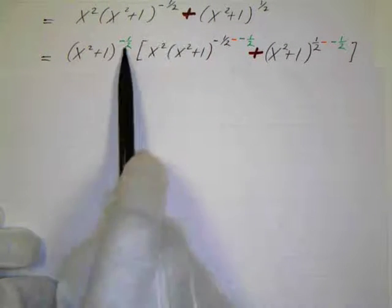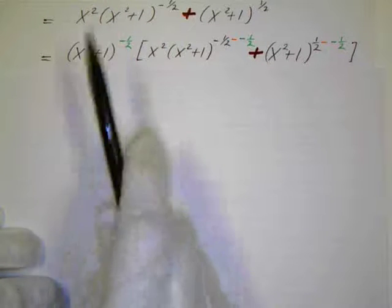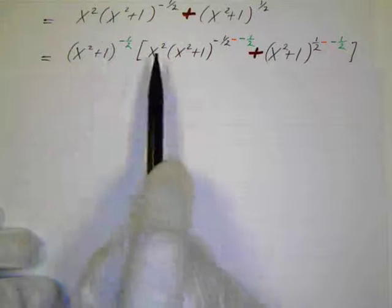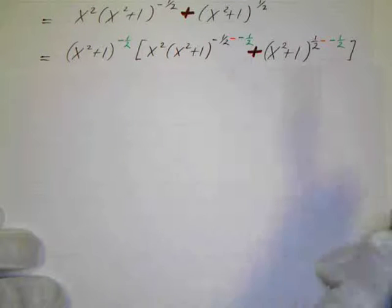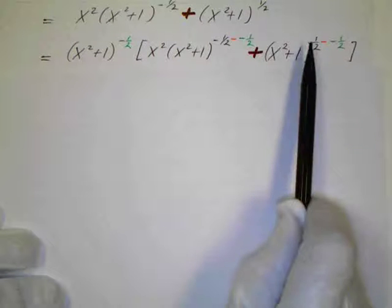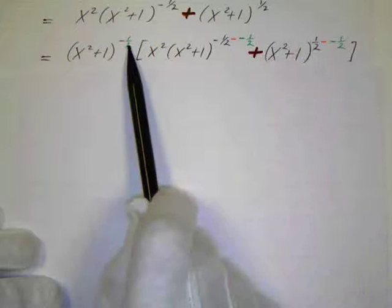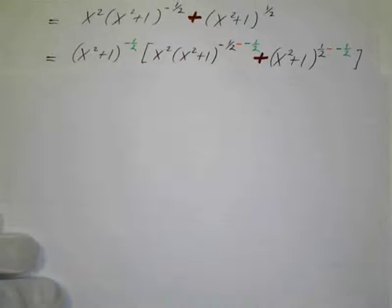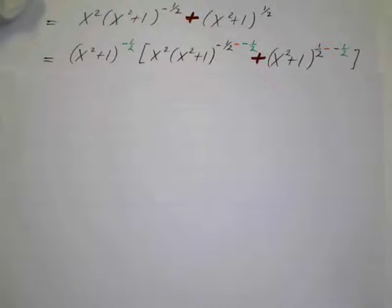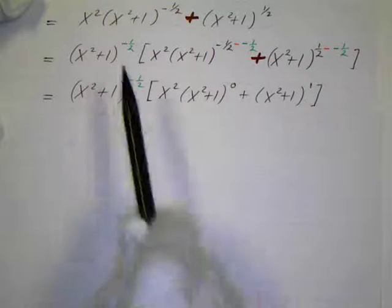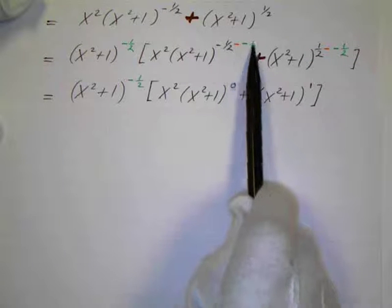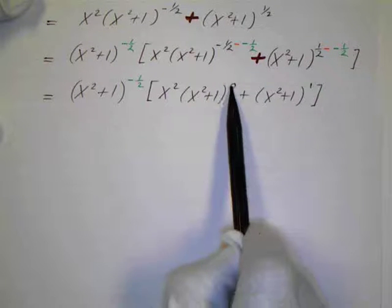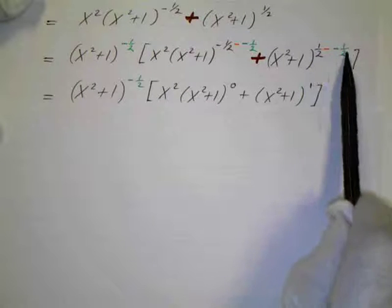I'm going to factor this out, and it's going to be the least power. The least power is negative 1 half, so x squared plus 1 to the negative 1 half. Factoring this out of both terms: out of the first term the x squared stays, and this is x squared plus 1 to negative 1 half — we subtract the exponent, so minus negative 1 half. Plus the second term, which is x squared plus 1 to the 1 half, and subtracting negative 1 half. So negative times a negative is positive: negative 1 half plus 1 half is 0, and 1 half plus 1 half is 1.